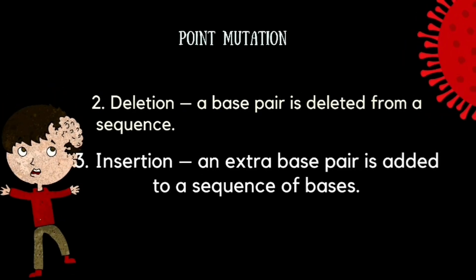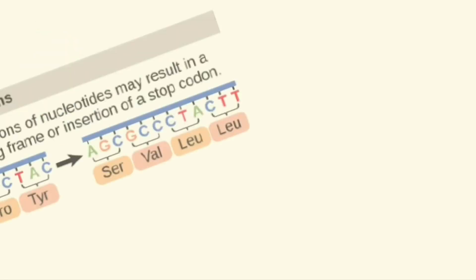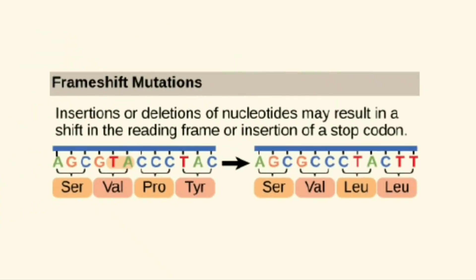Another type of point mutation is deletion and insertion. Deletion is when a base pair is deleted from a sequence. Insertion is when an extra base pair is added.